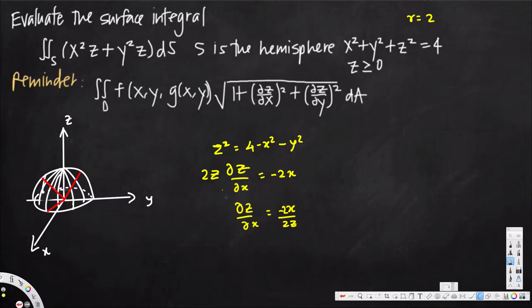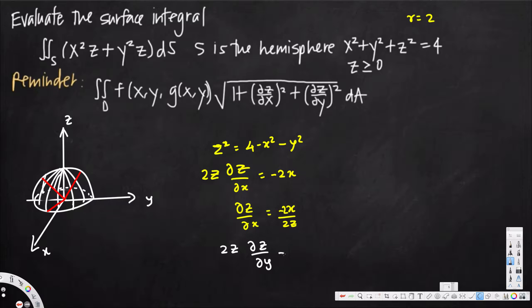Similarly, for ∂z/∂y we use implicit differentiation again. Differentiating with respect to y: 2z·(∂z/∂y) = −2y, so ∂z/∂y = −2y / 2z. Now we have both partial derivatives and can plug them into the surface integral formula.